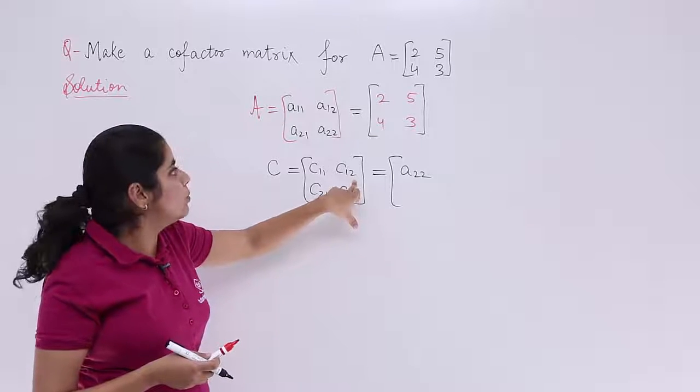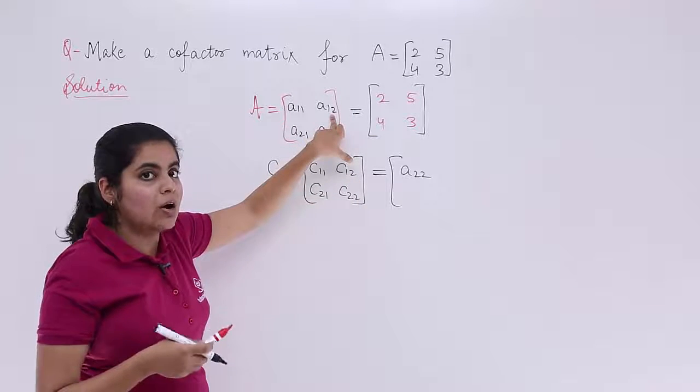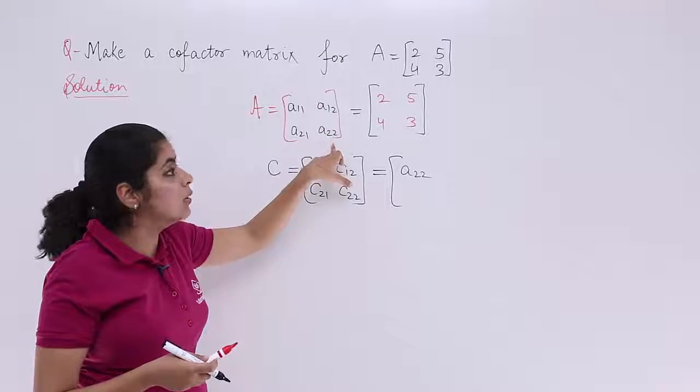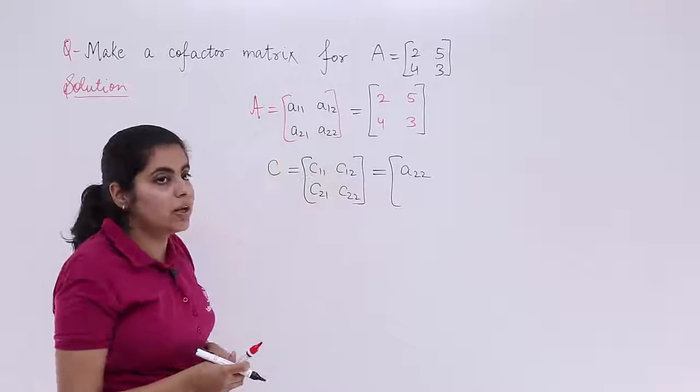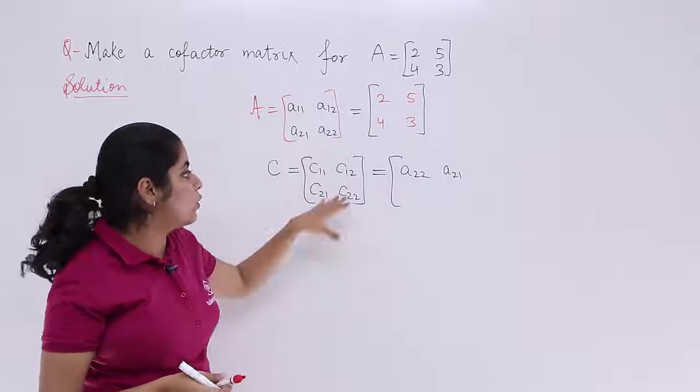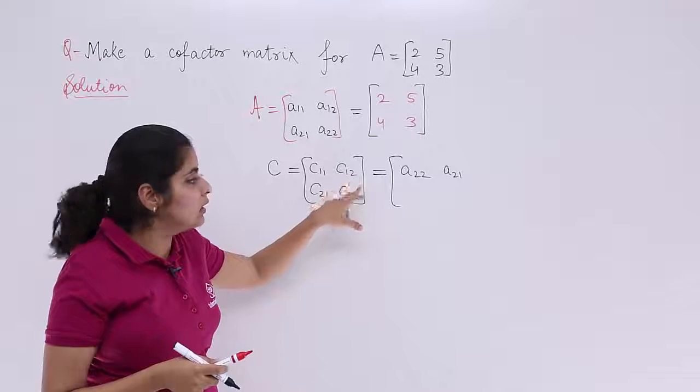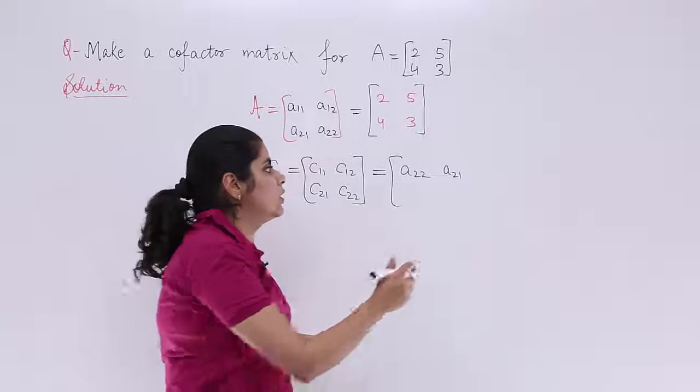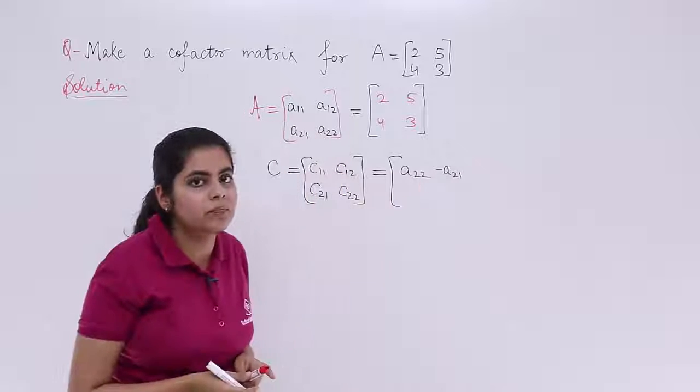Now C12. C12 means related to A12. How to do it? You know from the previous videos. Leave the first row, leave the second column. You are left with A21. So it is A21. Some changes should be there because it is not minor, it is a cofactor. 1 plus 2 is 3 which is odd number, so here it should be minus sign.